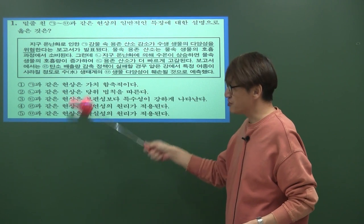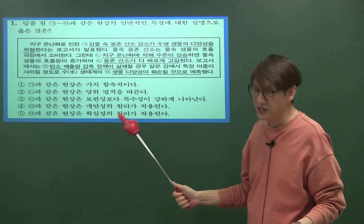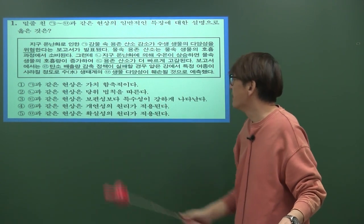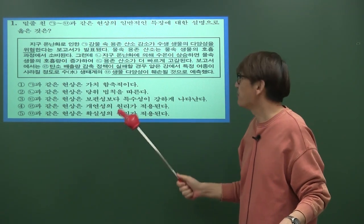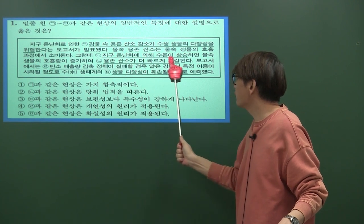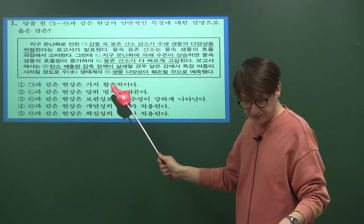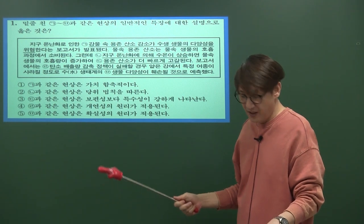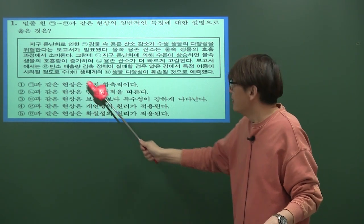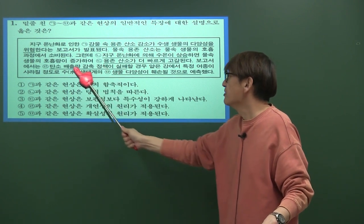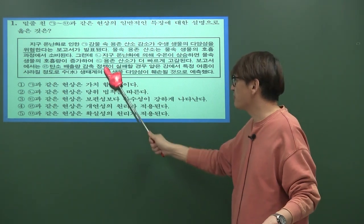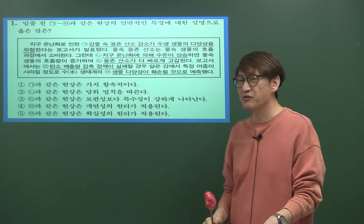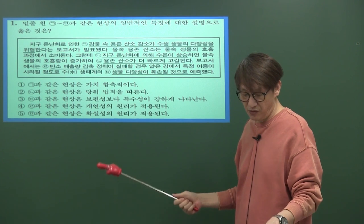지문에서 어떤 것이 자연현상이고 사회문화현상인지 골라내야 합니다. 강물 속 용존산소 감소, 수생생물의 다양성 위협, 지구온난화로 수온 상승, 용존산소 고갈 등은 자연현상입니다. 반면 탄소 배출량 감축 정책은 인간이 실시하는 것이므로 사회문화현상이고, 수생태계 생물 다양성을 훼손시키는 것 또한 인간이기 때문에 사회문화현상입니다.